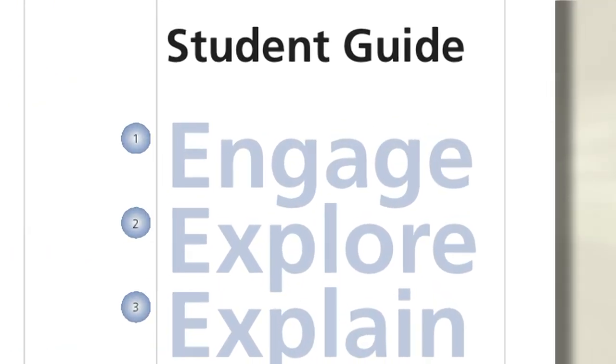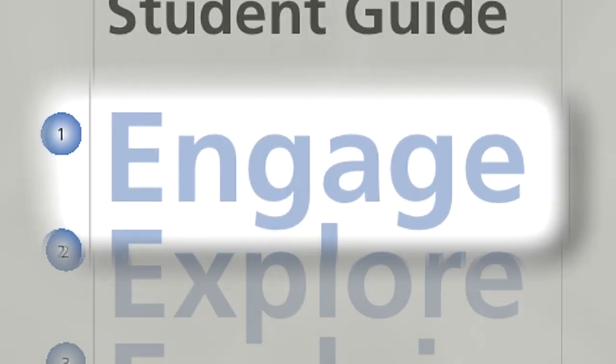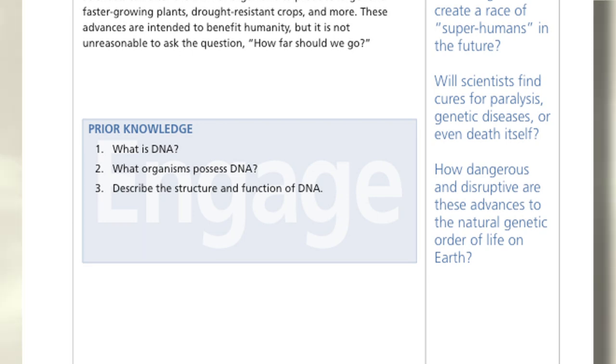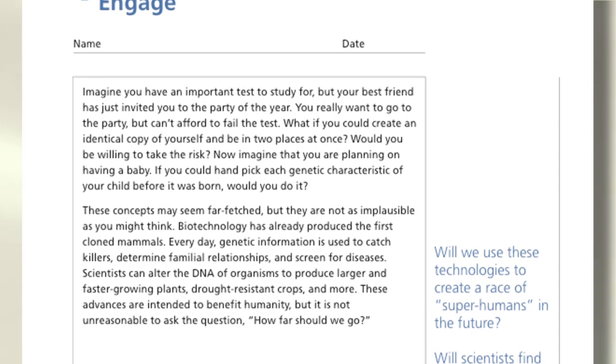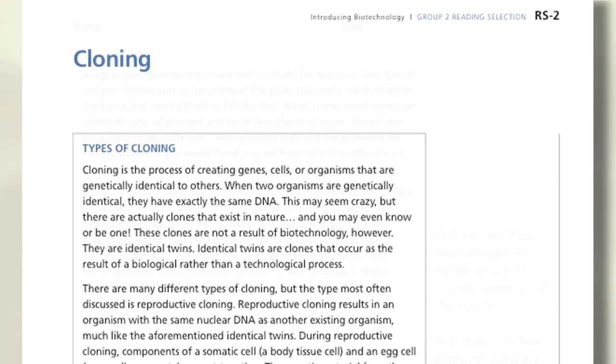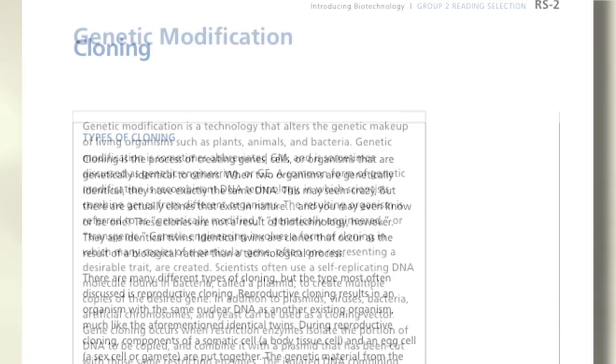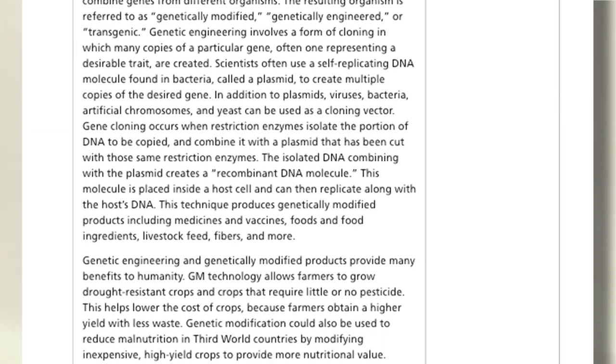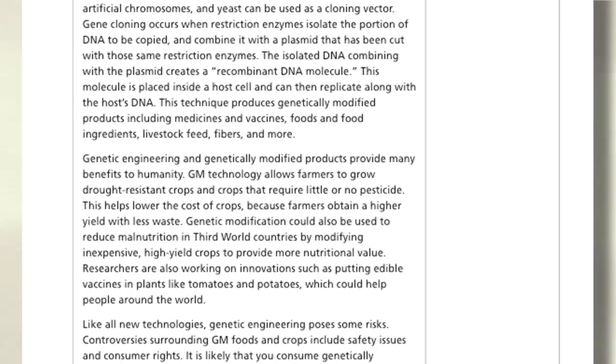The Inquiries in Science learning cycle begins with the engage section. Students will relate their prior knowledge about a particular topic in the context of a real-world scenario. For example, in the Introducing Biotechnology Kit, students start by discussing ethical issues about cloning and genetic engineering. Teachers will be able to identify misconceptions their students have about the topic through these discussions.